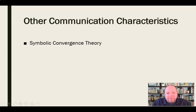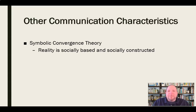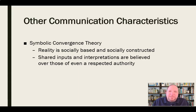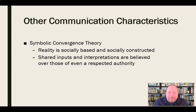There are a couple other communication characteristics of social movements I want to share. The first is symbolic convergence theory, which crosses all different types of campaigns. Symbolic convergence theory tells us that reality is socially based and socially constructed — we all construct our own reality and are influenced heavily by our social surroundings. It also tells us that these shared inputs and interpretations are believed even over those of a respected authority. We rely more on people with whom we're socially involved to construct that reality, and find that more trustworthy than a respected authority.